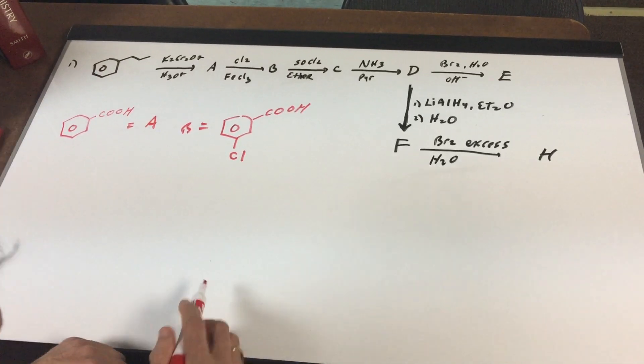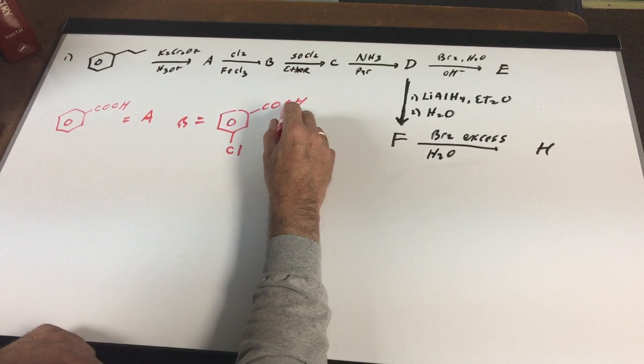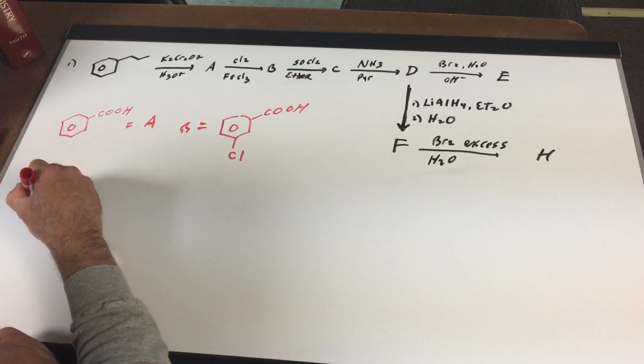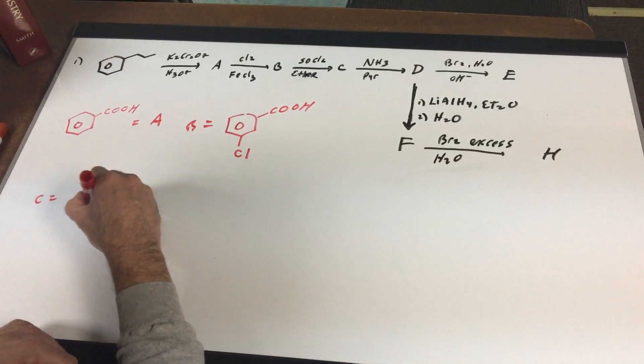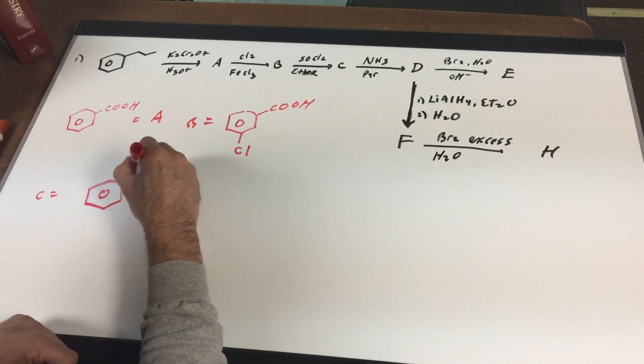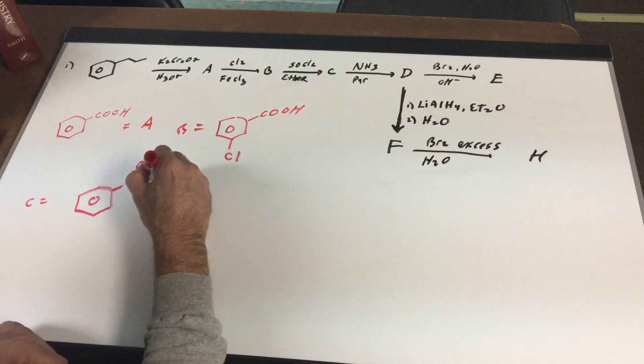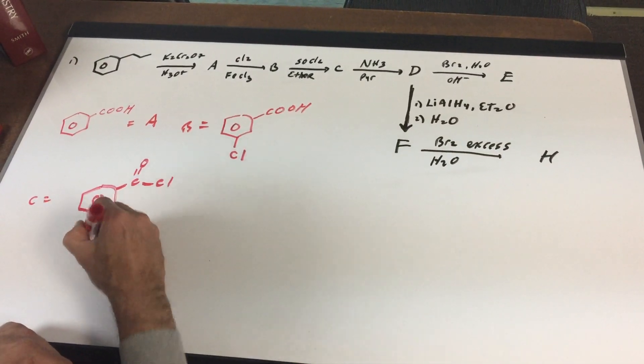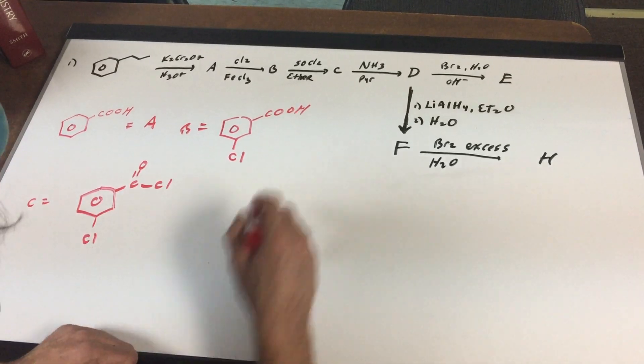Now we got to start thinking. SOCl2 is simply going to replace the OH group and produce an acyl halide. So that would give me this. And there's C. So far, so good. I'm being nice to you.